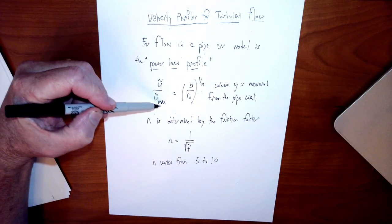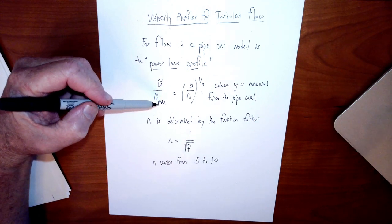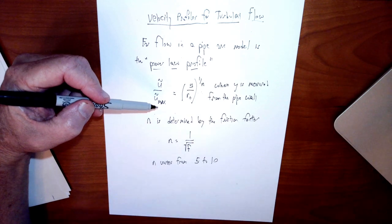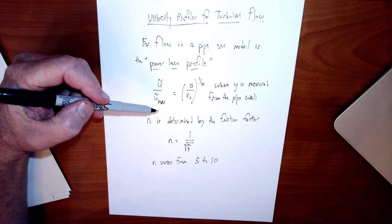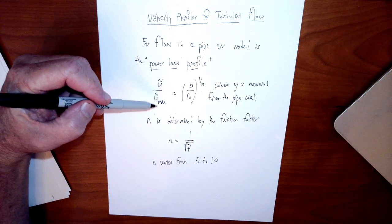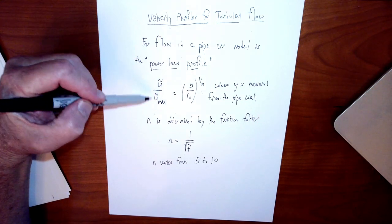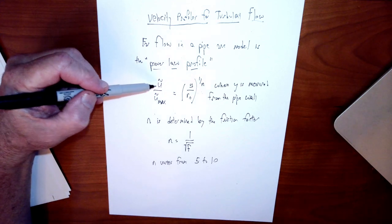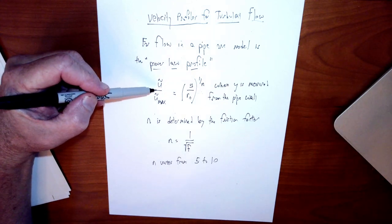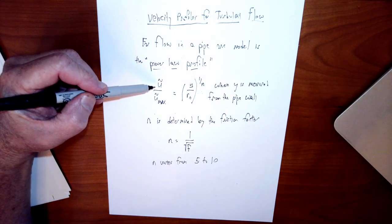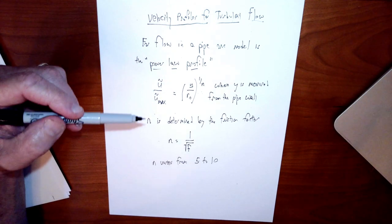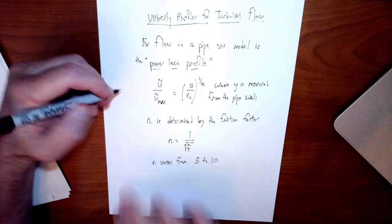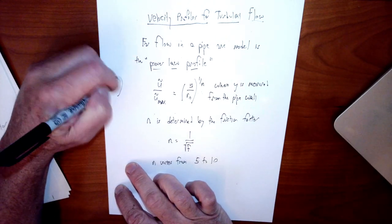The time-average maximum velocity may not be the actual maximum velocity in the pipe because turbulent swirling means some temporary forward swirl could cause the velocity to be even larger than the max — but this is the time-average maximum. Also make sure you keep firmly in mind that this average is the time-average. It's not the average velocity in the pipe. For the average velocity in the pipe, we've been using U-bar, which is a spatial average.